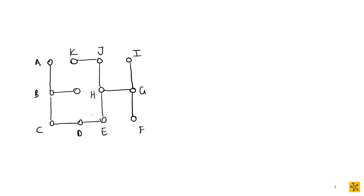Let's start with vertex A and activate it. When we write down our depth-first search traversal, we order our vertices by when they are activated — this gives a clear description of how we are traversing the graph to find the spanning tree. A is activated. We look at adjacent vertices to A which are not active; there's only one, which is B. So we activate B. Next, we look at B and its adjacent vertices, which are C and L.